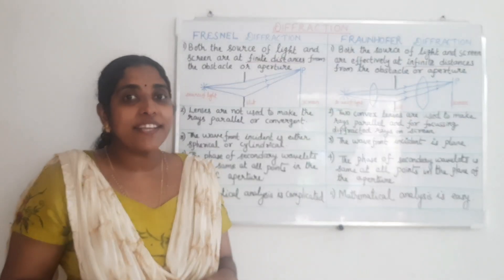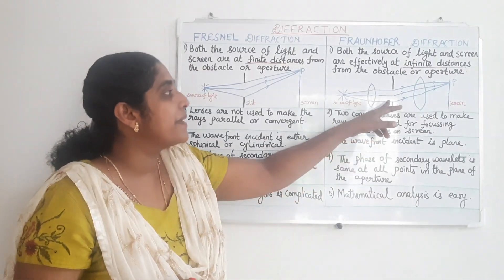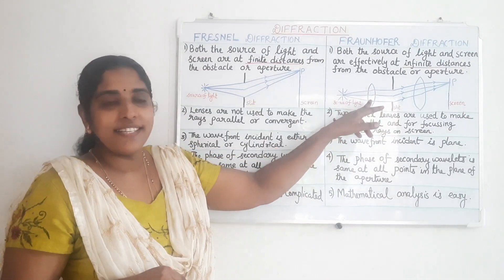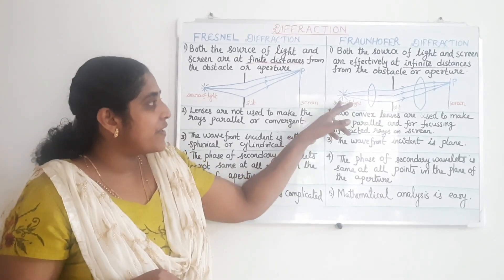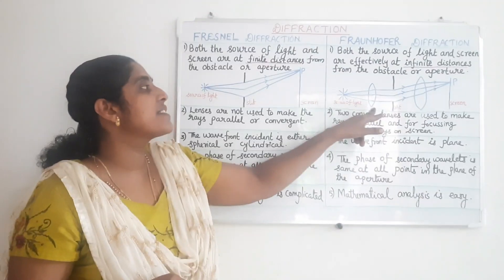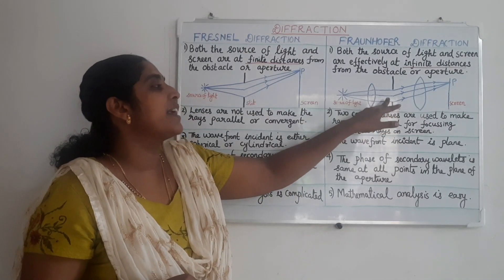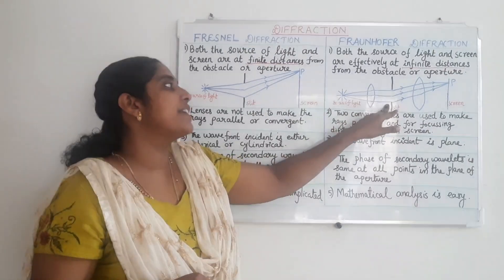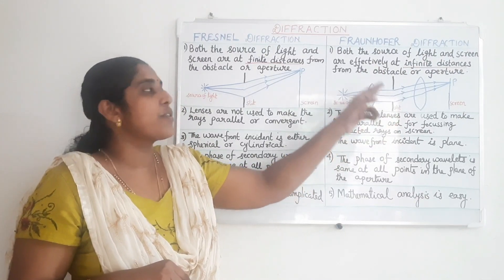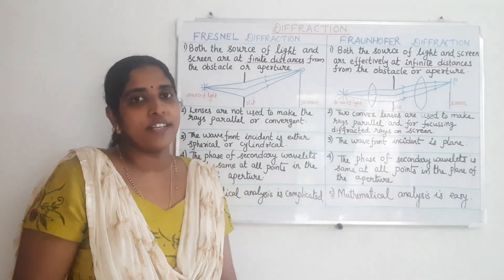In Fraunhofer diffraction, to produce that plane wavefront, we keep a convex lens in front of the slit. We use a point source of light, and when the light enters the convex lens it produces a plane wavefront. The plane wavefront is then incident on the obstacle or aperture or slit, and the diffracted beam is focused onto the screen.